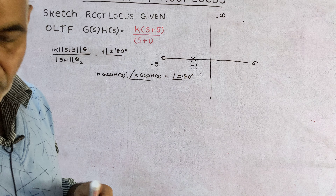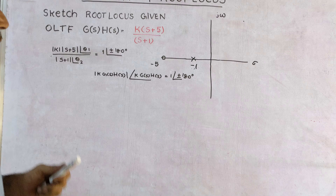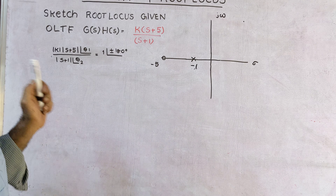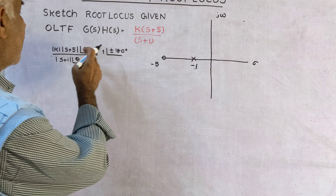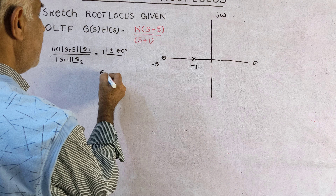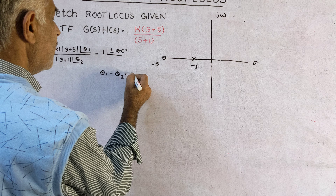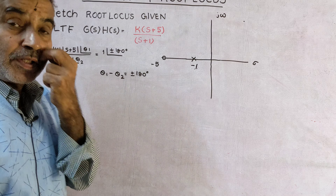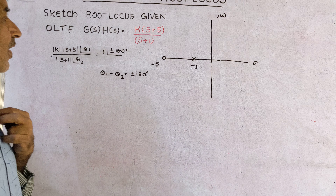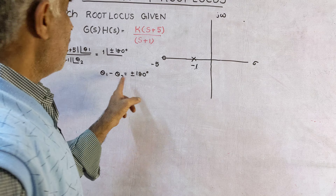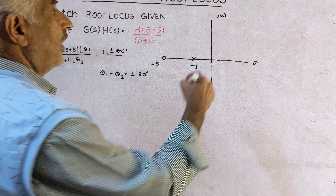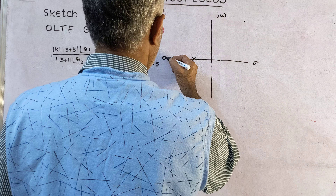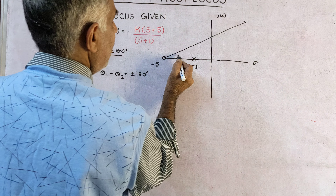On the s-plane, mark the pole and zero. For a pole you use a cross mark, and for a zero a circle. The pole is at s equal to minus 1 and the zero is at s equal to minus 5.